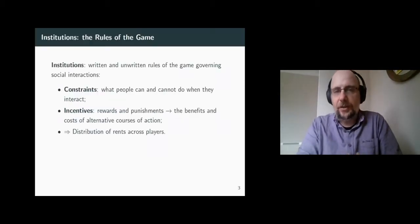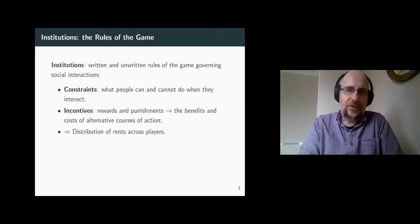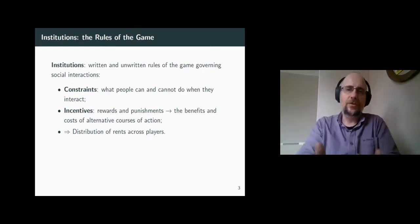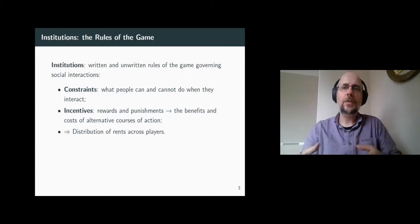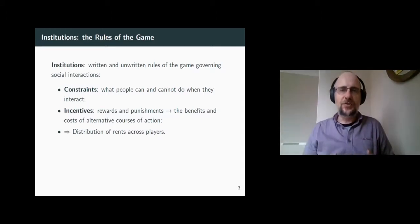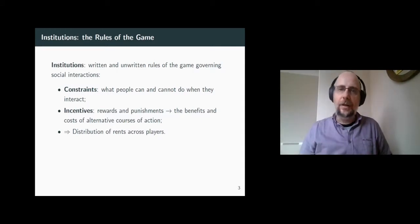Economic institutions are typically written. Examples of such written institutions are constitutions, laws, as well as contracts, which shape the way we interact with others. Those written institutions are called formal institutions.